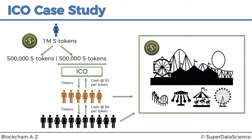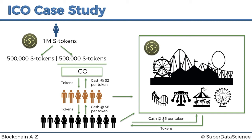The remaining question is: what do the businesses do with their tokens? They've received tokens as payment, but they might need to pay employees or distribute profits — they may not want to operate purely in tokens. A way to convert them back to dollars is to sell them back to the public. The public can buy tokens from the businesses at the current market price, which might be six dollars per token.